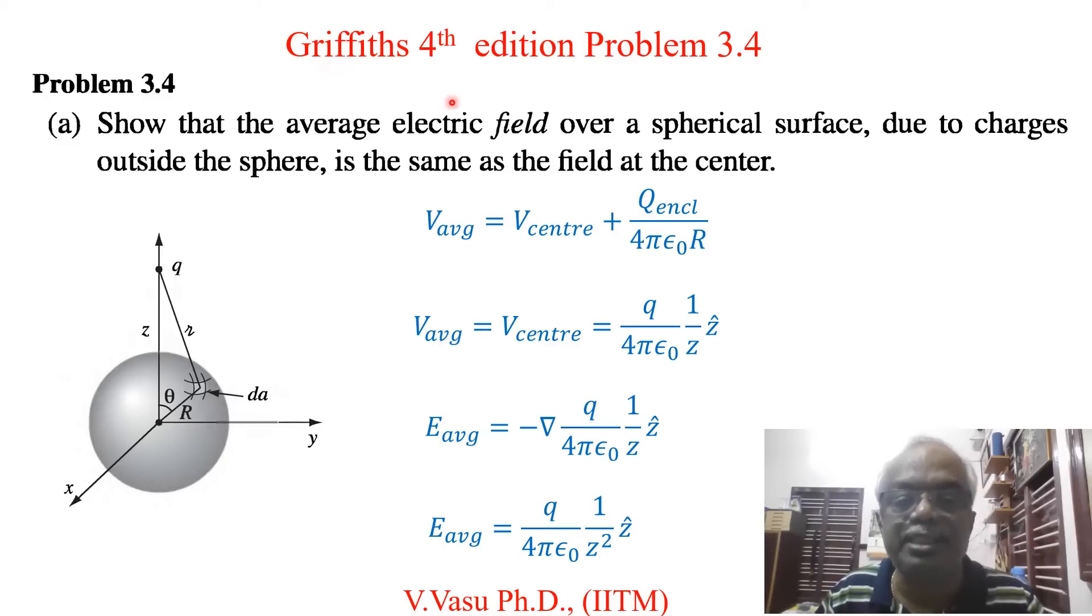In this lecture we will see the solution to problem 3.4 of Griffiths 4th edition Introduction to Electrodynamics. Problem 3.4 consists of two parts. Part A is: show that the average electric field over a spherical surface due to charges outside the sphere is the same as the field at the center.